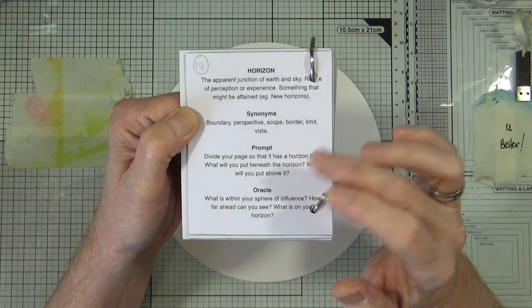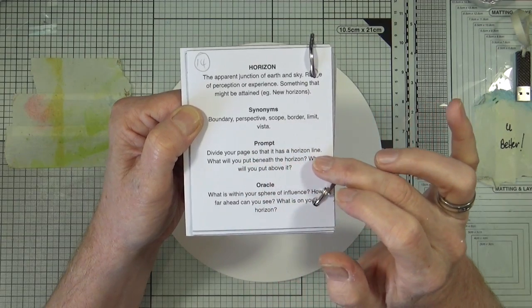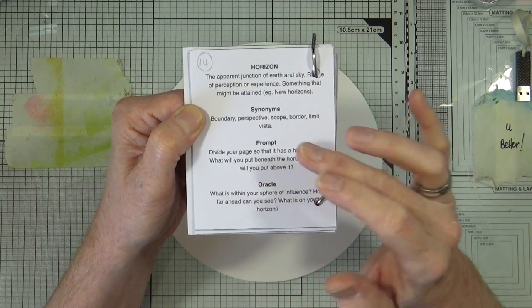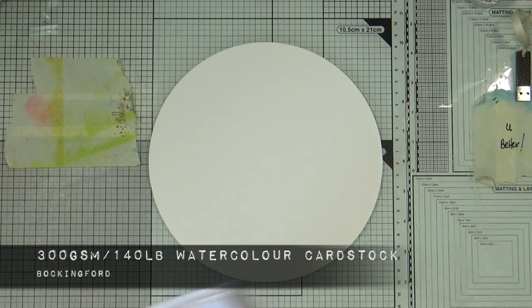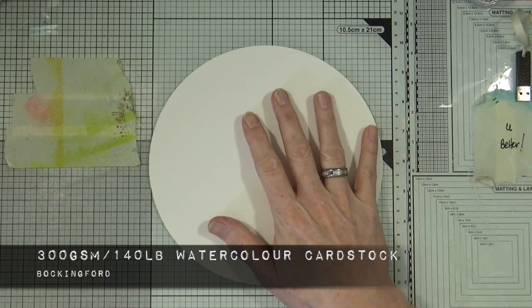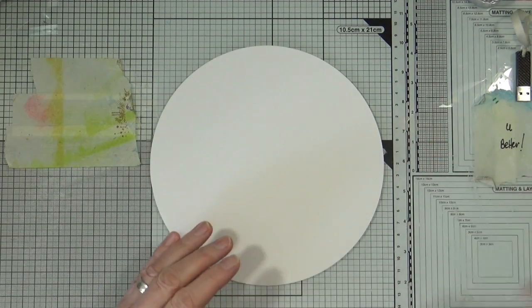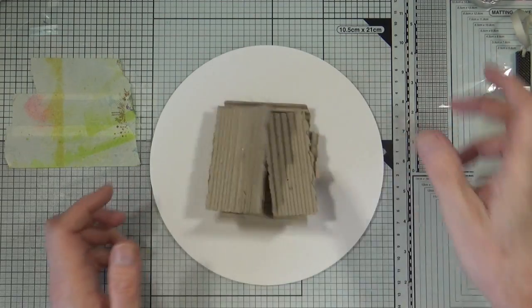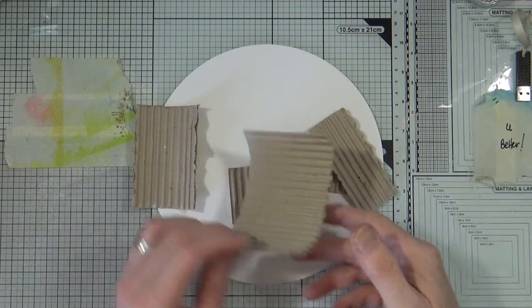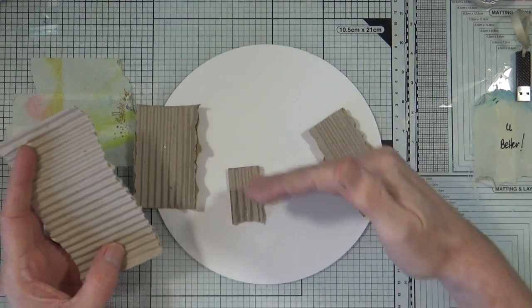For me, I like the idea of dividing the page so that it has a horizon line, but I think I'm going to create something in my circle journal rather than draw a line right across the middle.